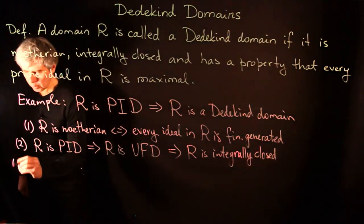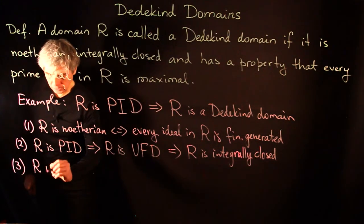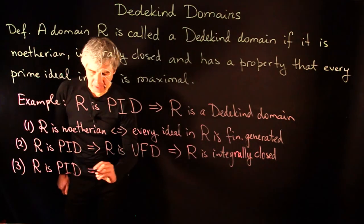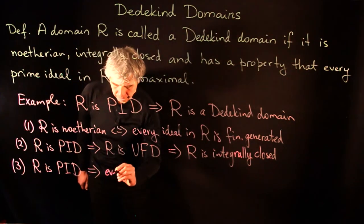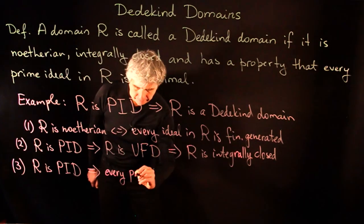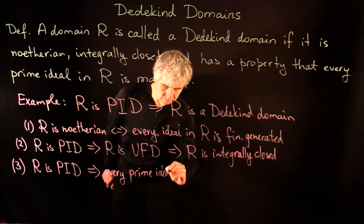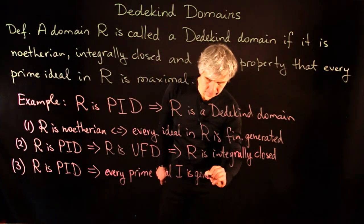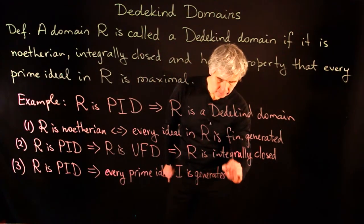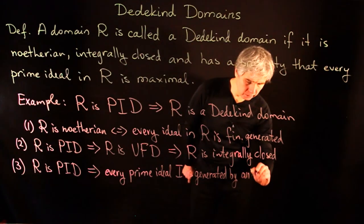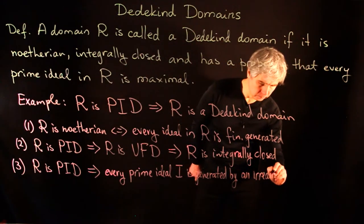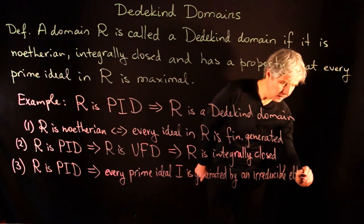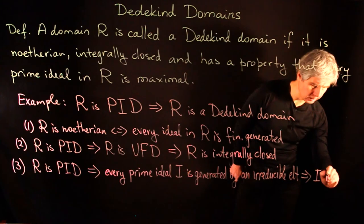And for property three, we know that if R is a principal ideal domain, then every prime ideal I is generated by an irreducible element, and hence I is maximal.